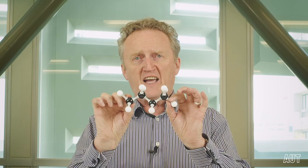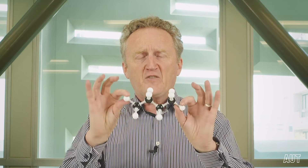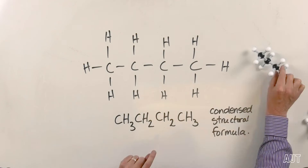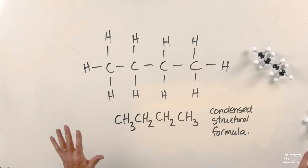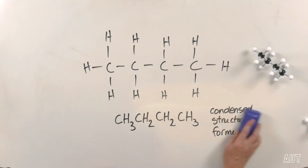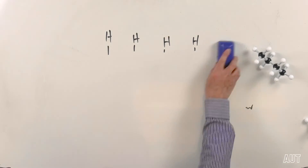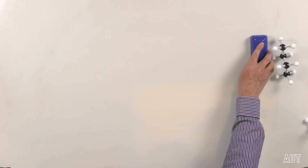So that is butane, and as luck would have it, we have a little molecule of butane here. Here's a little model of what butane looks like - carbon, carbon, carbon, carbon. You can see that the carbon chain forms a zigzag. So that's C4H10 with ten hydrogens. What about that other arrangement of C4H10 that we had - how could we draw that more quickly using this condensed structural formula idea?